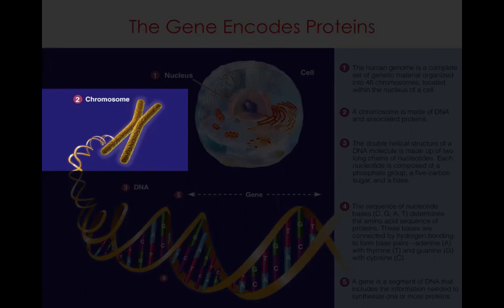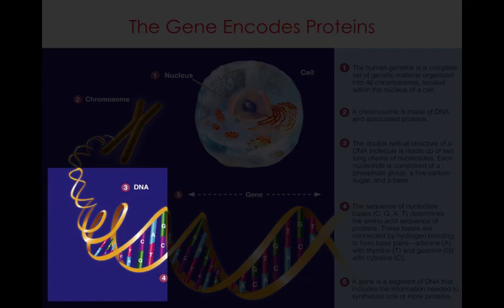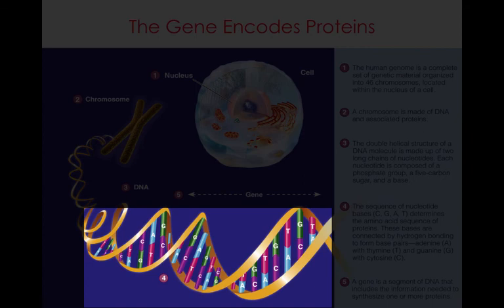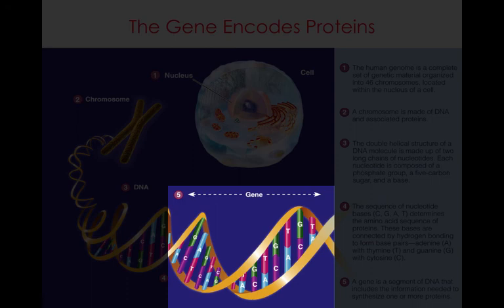A chromosome is made of DNA and its associated proteins. The double helix structure of DNA is made up of two long chains of nucleotides — the proverbial double helix. Each nucleotide is composed of a phosphate group, a five-carbon sugar, and a base. The sequence of nucleotide bases — C, G, A, and T — will determine the amino acid sequence of proteins. A gene is a segment of DNA that includes all the information needed to make proteins.